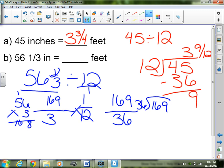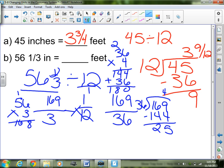169 divided by 36. Let's see. I think 36 can go in about 4 times. 36 times 4. 4 times 6 is 24. 4 times 3 is 12. Plus 2 is 14. It can go in 4 times. So I get 144. I need to subtract. 25 left over. So I have 4 and 25 over 36 feet.